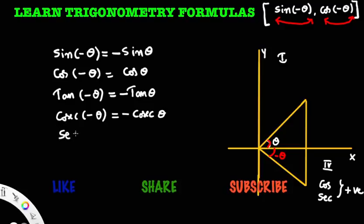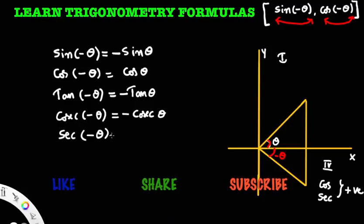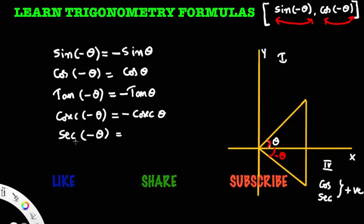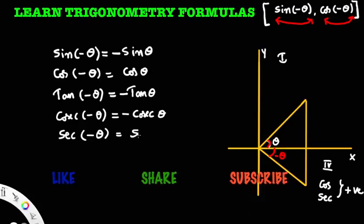Secant of minus theta — what is secant of minus theta? Minus theta lies in the fourth quadrant. In the fourth quadrant, secant is positive. So secant of minus theta is secant theta.